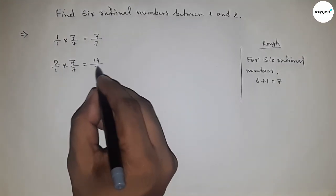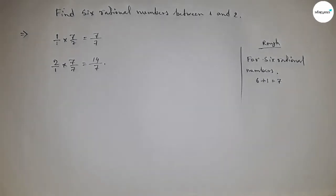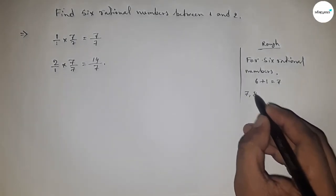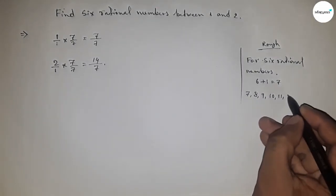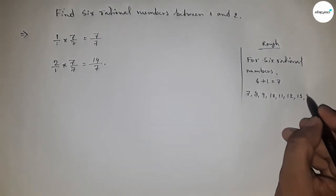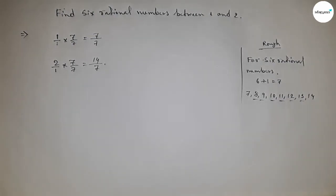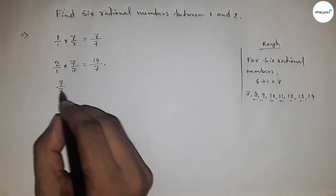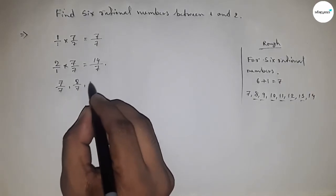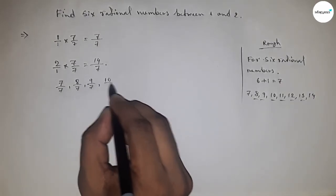And this is fourteen by seven. So between seven and fourteen, we can get six numbers. By this, we can form six rational numbers. So here: seven upon seven, eight upon seven, nine upon seven...